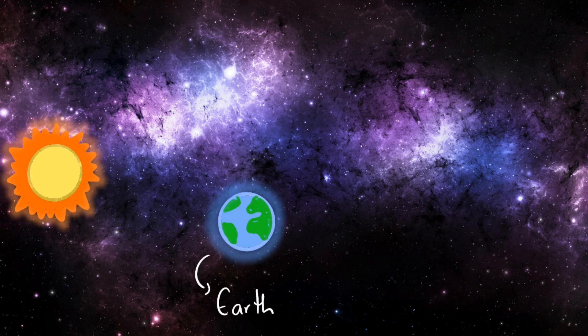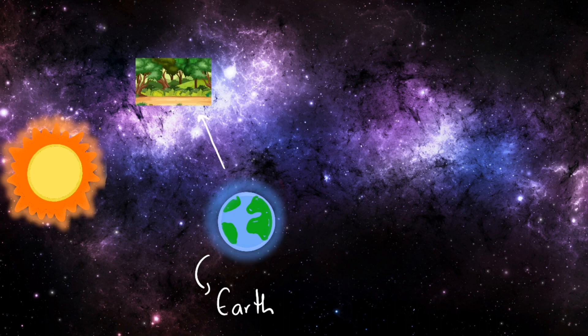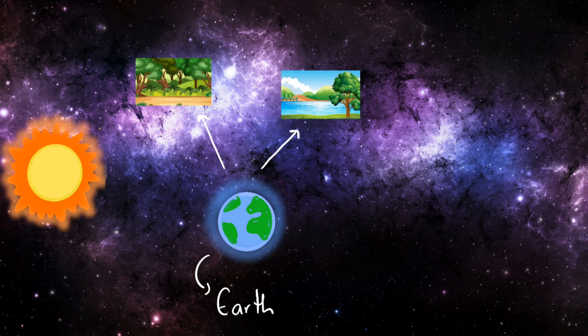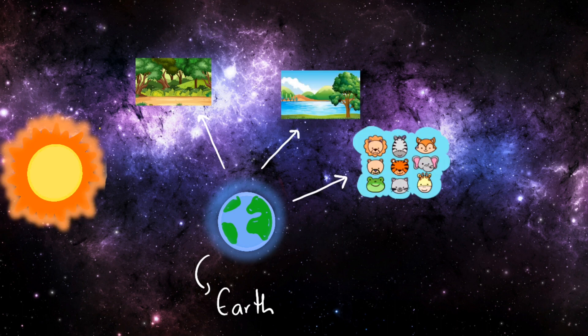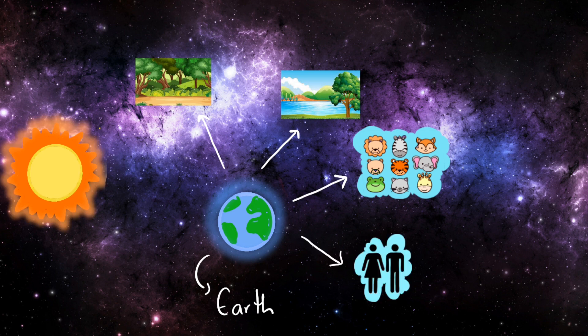Earth has the right distance from the Sun. On Earth there are plants, water, animals, humans, and insects.